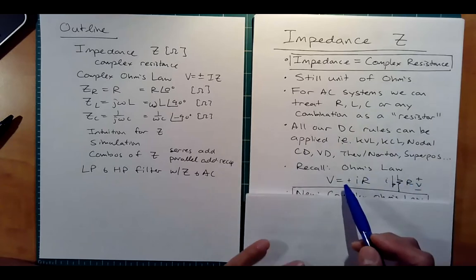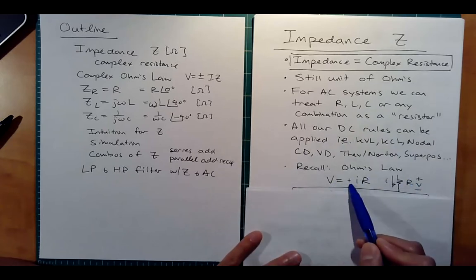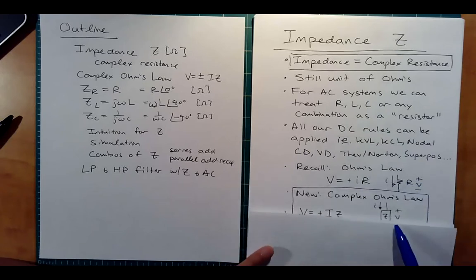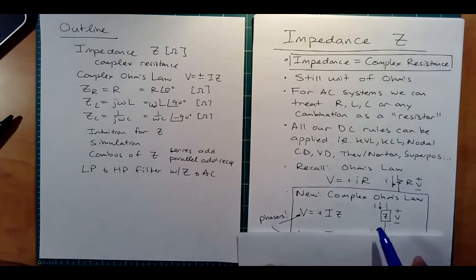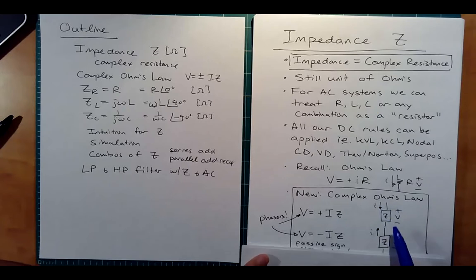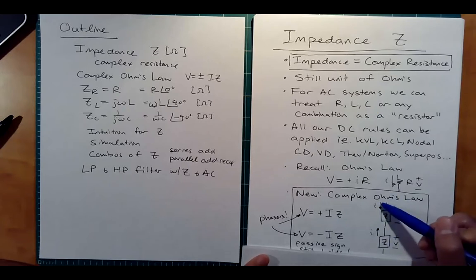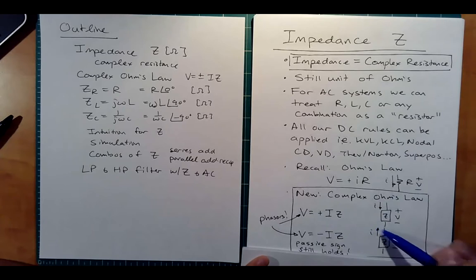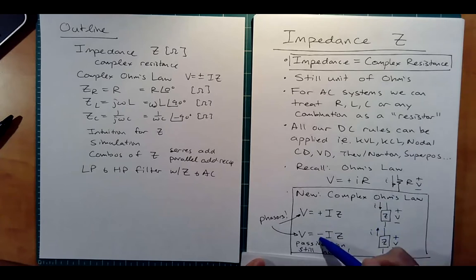Ohm's law: we had V equals plus or minus IR, right? Passive sign convention. Now we have V equals plus or minus IZ. The same rules apply: you define current going into the positive terminal, you use the positive. You define current going out of the positive terminal, you use negative.